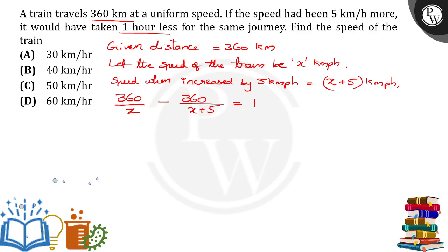Then by taking the LCM for the denominator, x into x plus 5 is the denominator. In the numerator we will get 360 times x plus 5 minus 360 times x. So, 360x plus 1800 minus 360x equals x squared plus 5x.